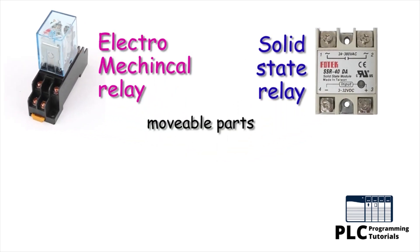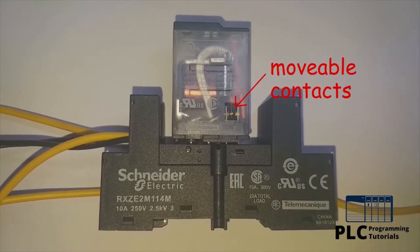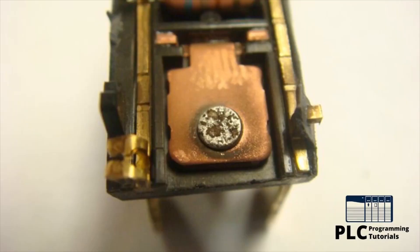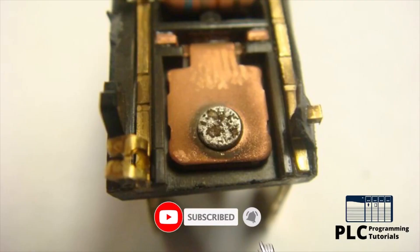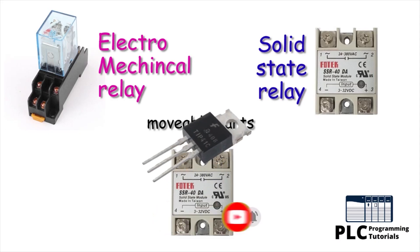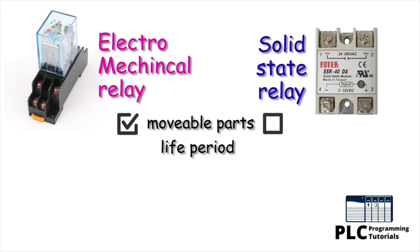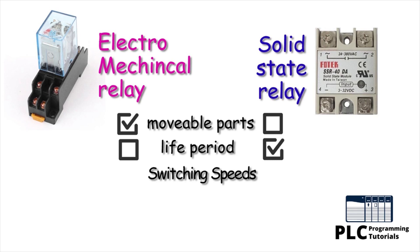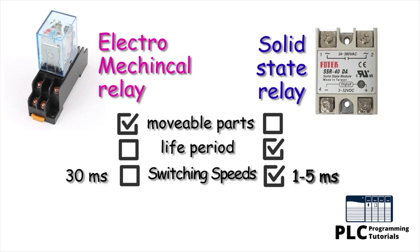Now we can conclude today's tutorial by comparing the electromechanical relay with the SSR relay. First, regarding movable parts: the electromagnetic relay has movable contacts, which makes its life shorter because over time its contacts wear out and stop conducting current. With the SSR relay, we don't face such issues as there are no moving parts inside it — triacs or transistors act as the switching contacts. The lifetime of the solid state relay is considerably larger than the electromagnetic relay. Regarding switching speed, the SSR relay switching time can be as short as one millisecond, while the switching time of an electromagnetic relay can lie between 20 to 30 milliseconds. So the SSR relay is more suitable for fast switching applications.